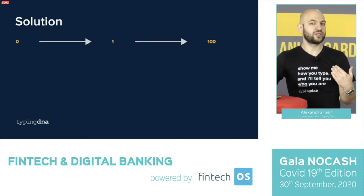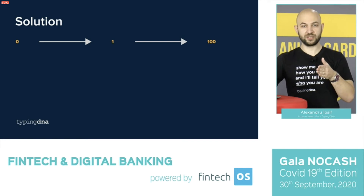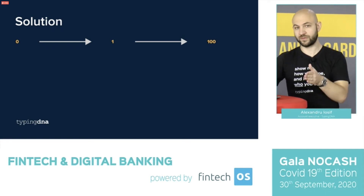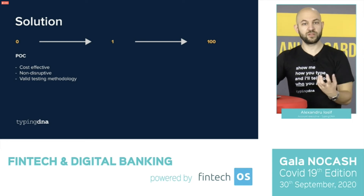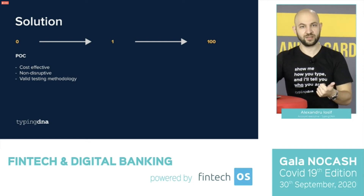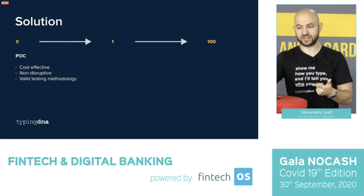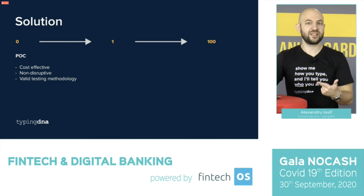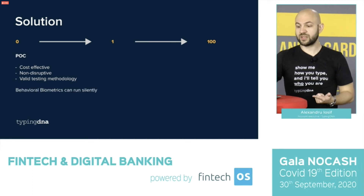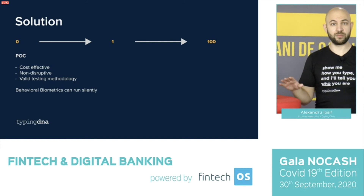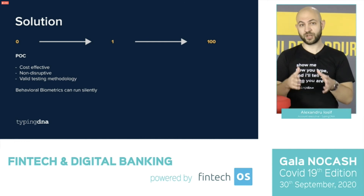What all our solutions have in common is this structure: there are two phases when rolling out any authentication technology — the zero-to-one phase and the one-to-one-hundred phase. The zero-to-one — let's call it the POC — requires it to be cost-effective, non-disruptive for both your workforce and your customers, and a valid testing methodology. The beauty here, and this is the novelty with behavioral biometrics compared to other authentication systems, is that behavioral biometrics can run silent.